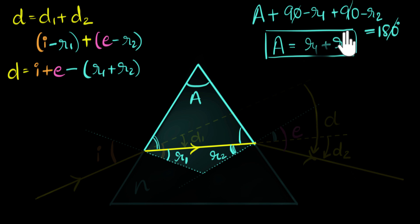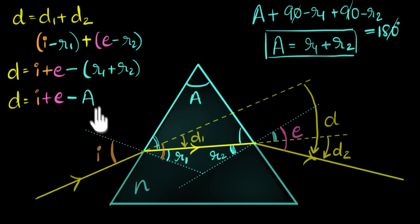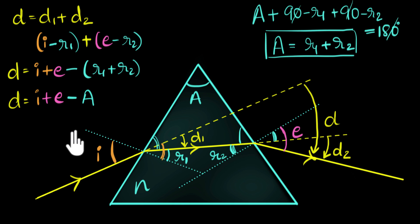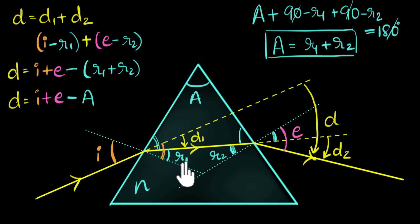We can now substitute this directly. Our equation becomes D equals I plus E minus A. One more thing we might have to do is eliminate E, and that turns out to be the most tedious part of this derivation. If we look carefully, we can write E in terms of R2 by using Snell's law. Then by using A = R1 + R2, R2 can be written in terms of R1, and again by using Snell's law, R1 can be written in terms of I.